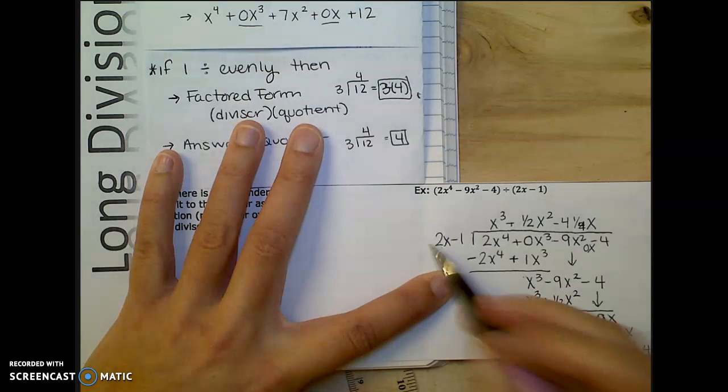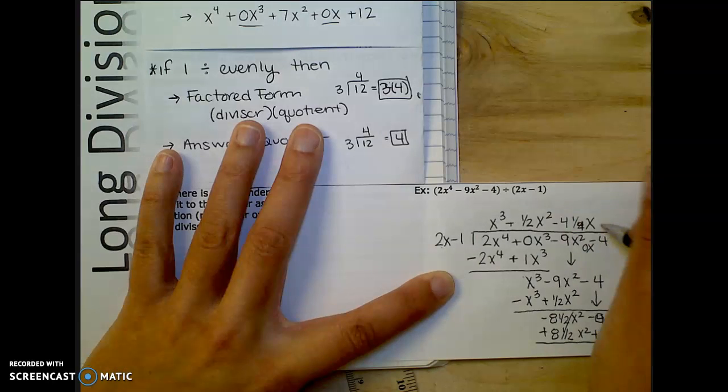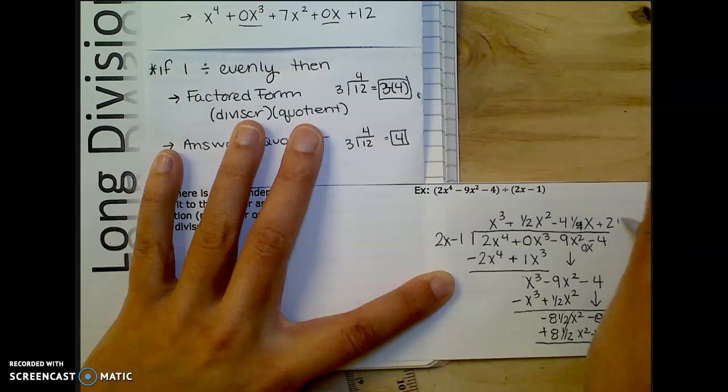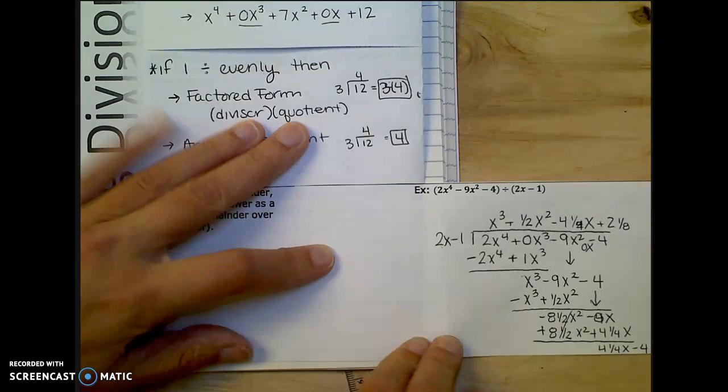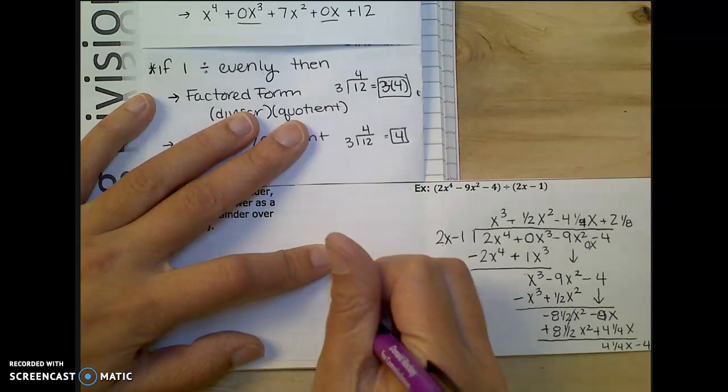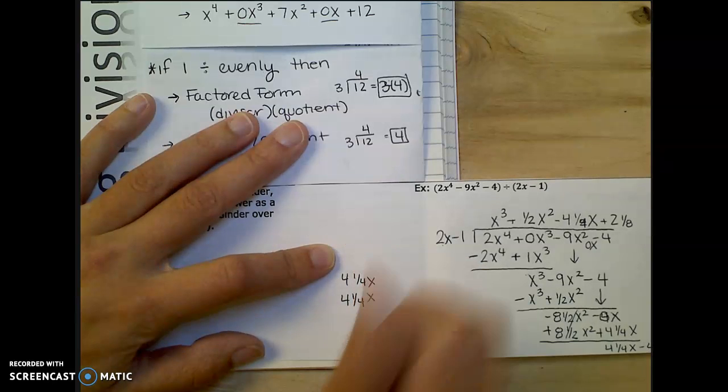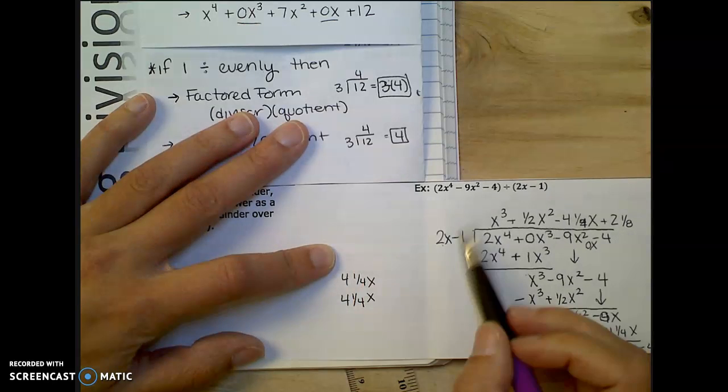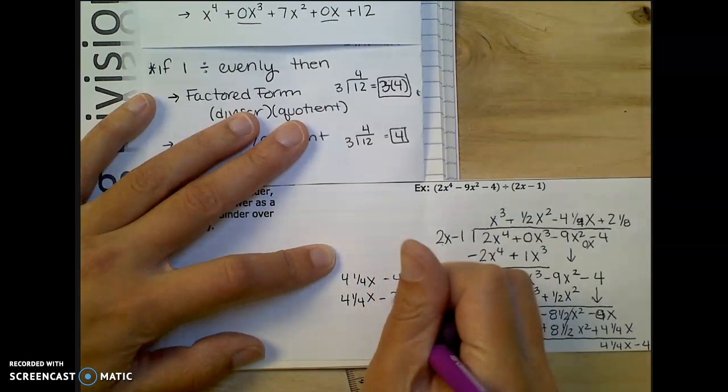And then I have to do it one more time. So what times 2x will get me 4 and a fourth. Again, I think if I just take half of that, it'll be at 2 and an eighth. Gross. But when I multiply, I think I am going to have a remainder here. So I kind of ran out of room. So 2 and an eighth times 2 will be 4 and a fourth. And this is under my 4 and a fourth x. And then 2 and one eighth times negative 1 is going to be negative 2 and one eighth.